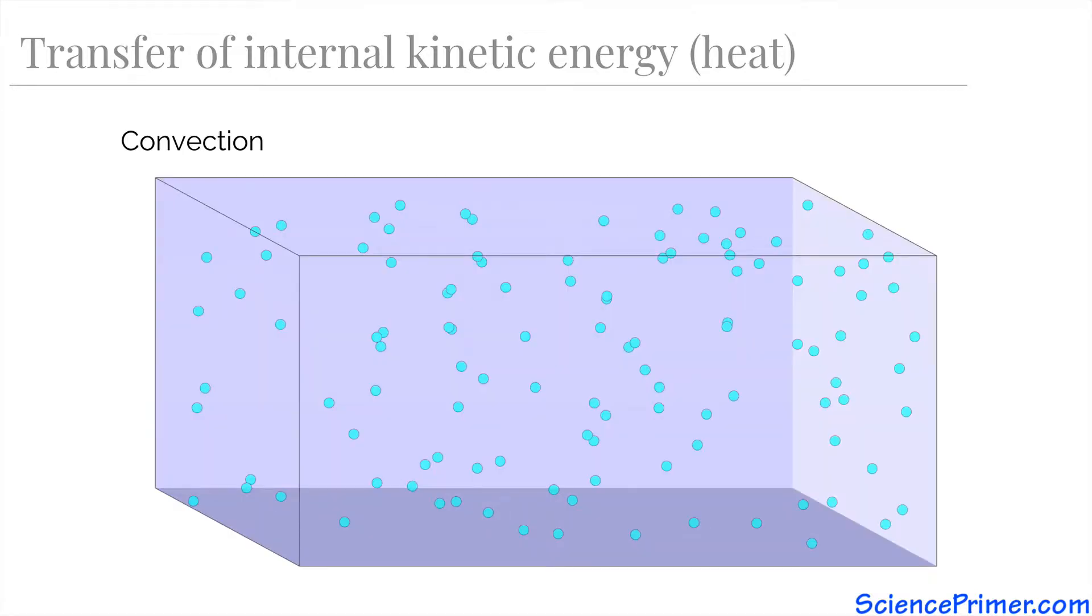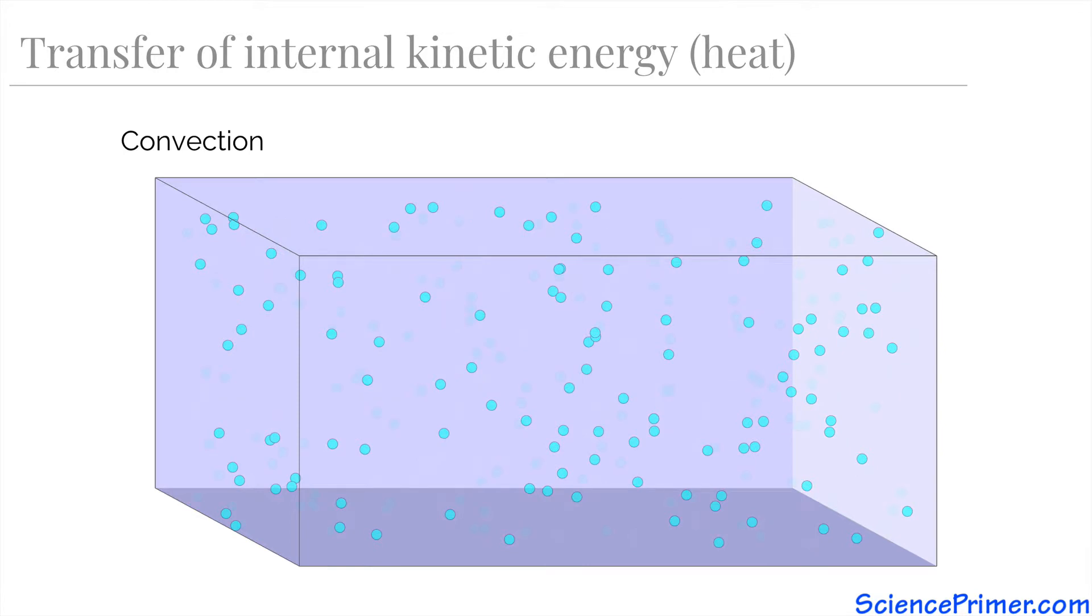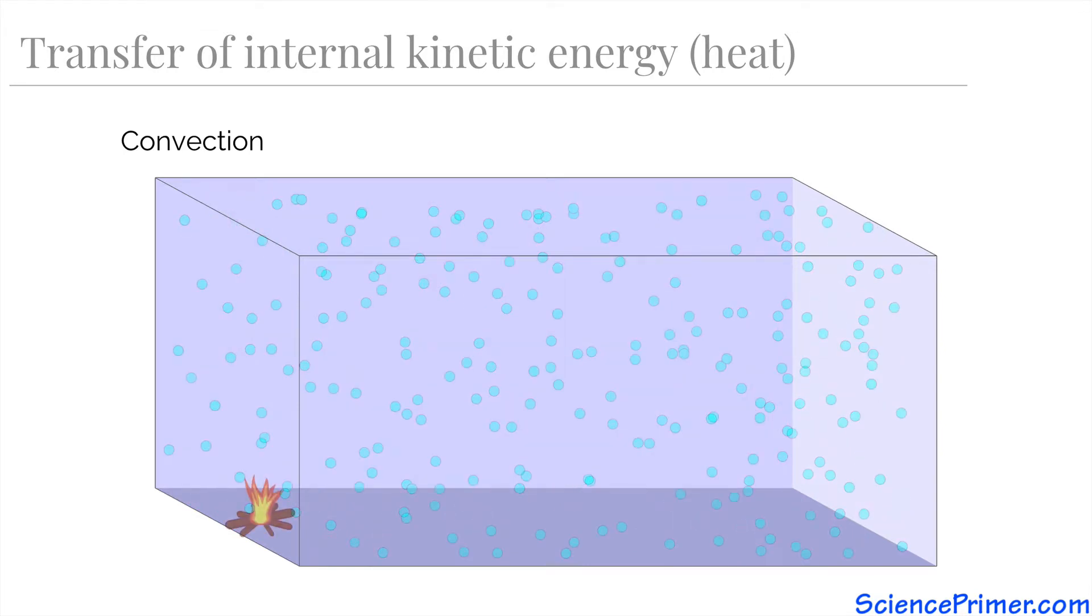Take a room full of gas molecules. All of the gas molecules in the room have energy and are moving around. If we apply a heat source by lighting a fire on one side of the room, some of the energy from that fire will be transferred to the molecules of gas in the room.